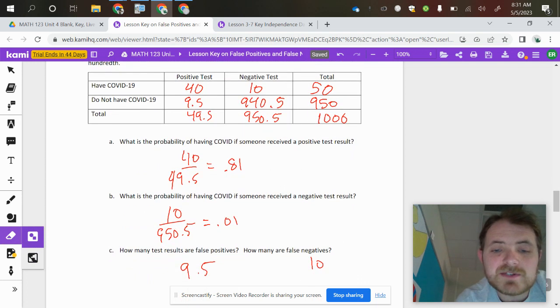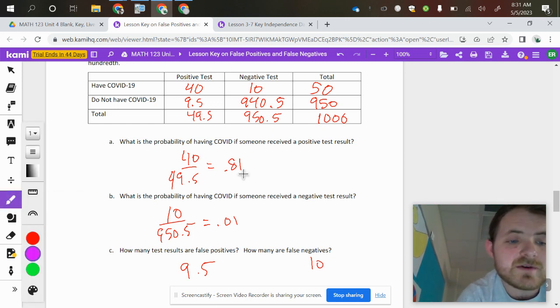How many test results are false positives? How many are false negatives? So a false positive is where you test positive, but you are actually negative. So somebody that does not have COVID-19, but they tested positive would be 9.5.